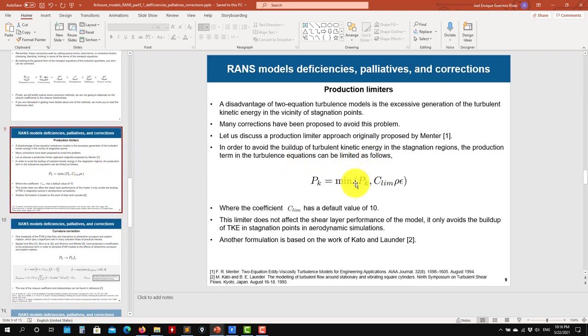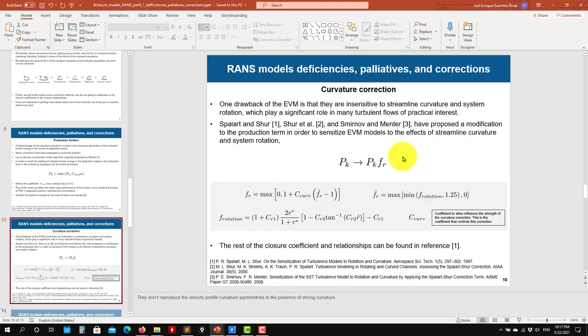So the production limiter is doing this one. You put this limiter here. This is the coefficient. And it's doing some clipping. In the curvature correction, basically a little bit in a chart is doing this.